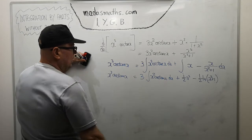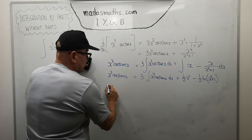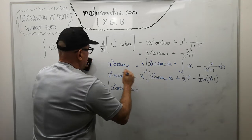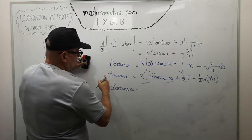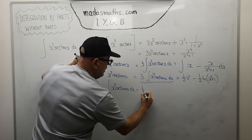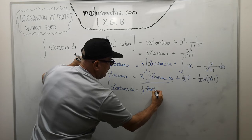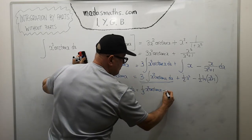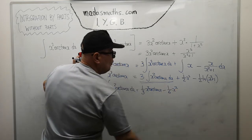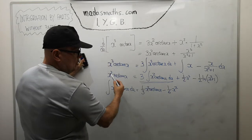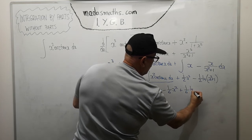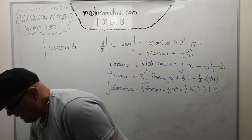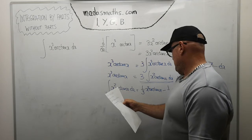Rearranging: ∫x²·arctan(x)dx is on the right with a factor of 3, so I move it to the left. Dividing everything by 3 gives ∫x²·arctan(x)dx = ⅓x³·arctan(x) minus ⅙x² plus ⅙·ln(x²+1) plus C. I checked the answer and it's correct.